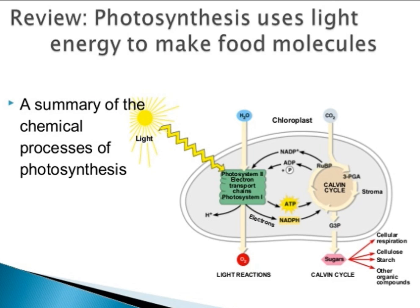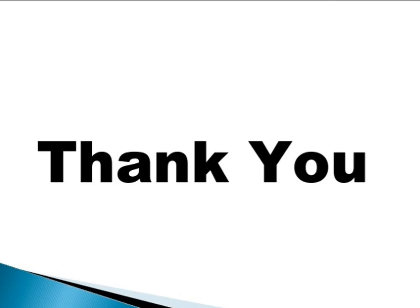In summary, photosynthesis involves two main processes: the light reaction and the dark reaction, as shown in the chemical process summary diagram. Thank you very much.